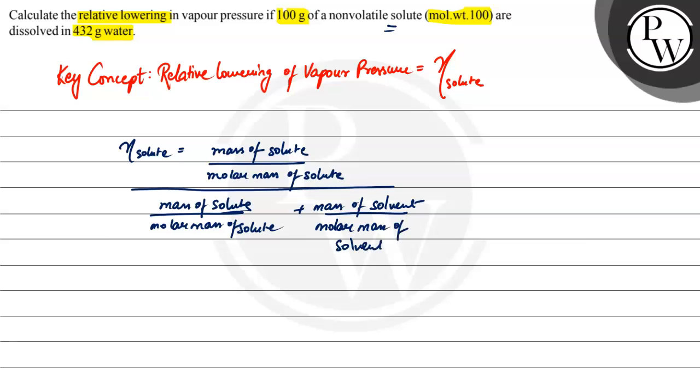Let's put this value and calculate the answer. So 100 grams divided by molar mass of 100, divided by 100 plus water used, that's 432 grams by 18.